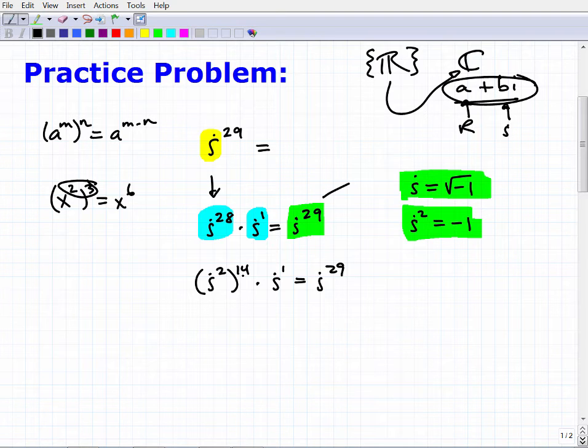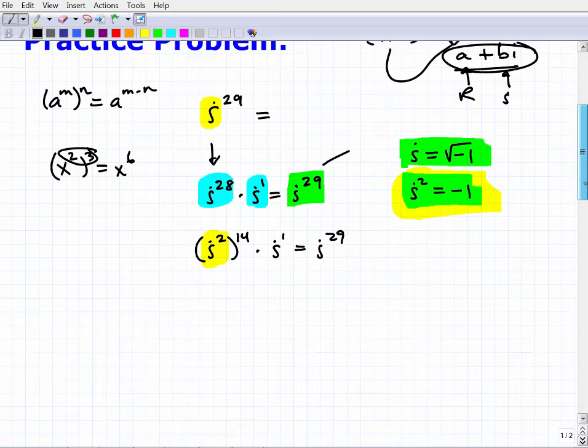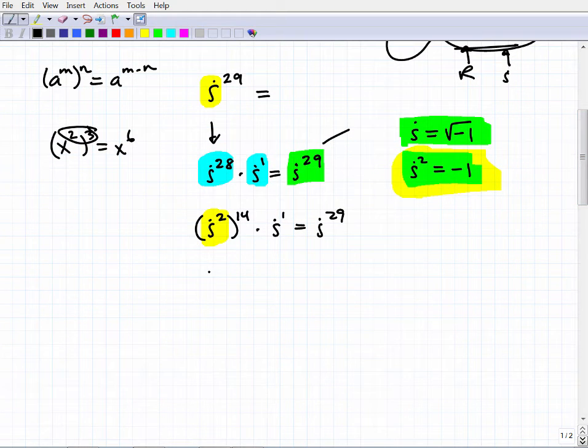So you can see here, i to the 28th is the same thing as i squared times, all that taken to the 14th power. Now, why did I choose i squared? Well, obviously I know the value of i squared over here. Okay. It's negative one. So now I can just substitute. i squared is the same thing as negative one to the 14th power times i. That is equal to i to the 29th.